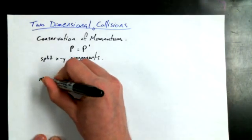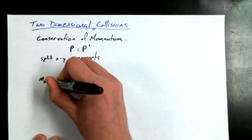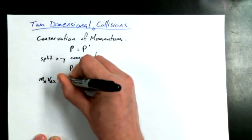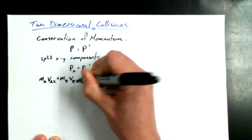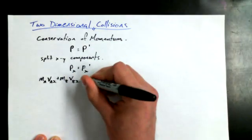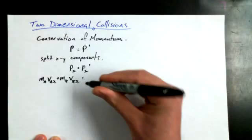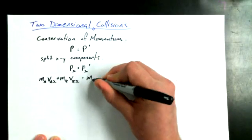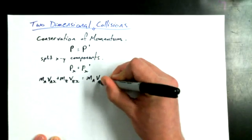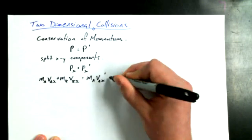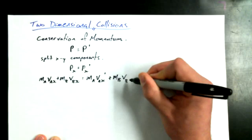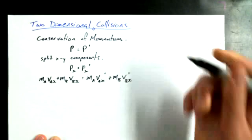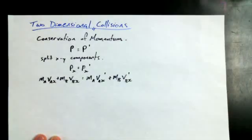So, MA times VA in the X direction, plus mass B times velocity initial B in the X direction, is equal to the primed version of that, the after version. You can see that you really got to do a lot of bookkeeping here with the subscripts. Because I've got VBX and I got VBX primed. It starts to get to be a lot to keep track of.